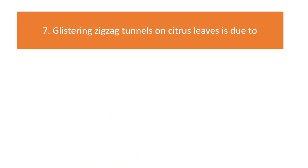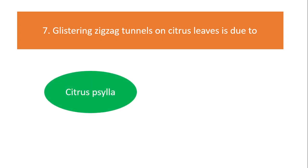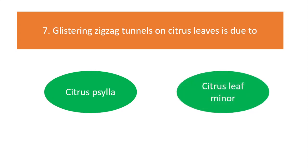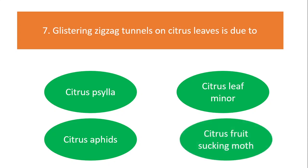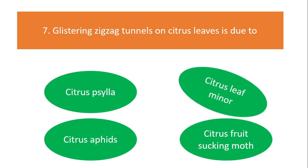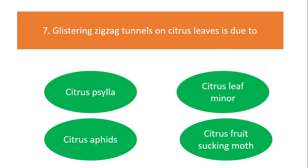Glistening zigzag tunnels on citrus leaves is due to citrus scilla, citrus leaf miner, citrus aphids, or citrus fruit sucking moth? The answer is citrus leaf miner.